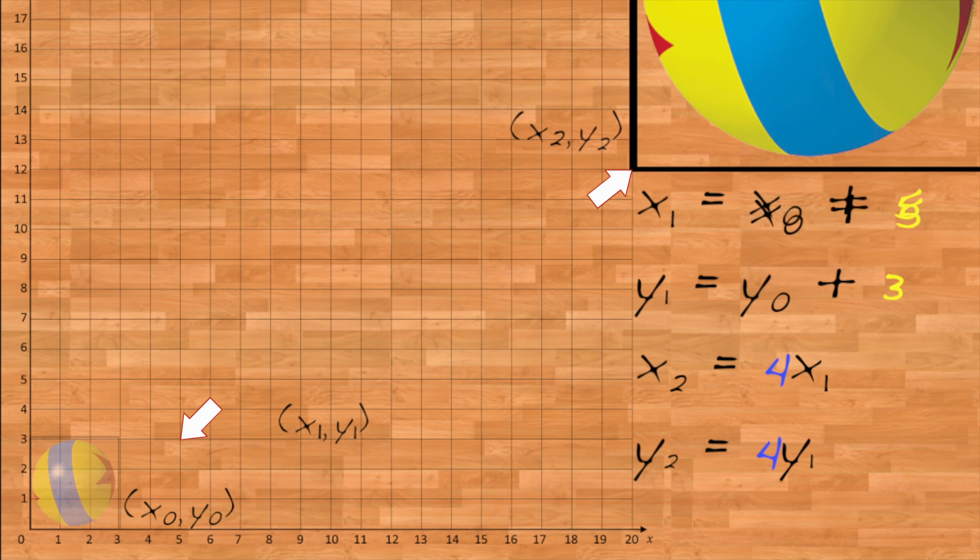Substitute our expressions for x1 and y1. x2 equals 4 times x0 plus 5, which equals 4 times x0 plus 4 times 5, which equals 4 times x0 plus 20. And y2 is equal to 4 times y0 plus 3, which equals 4 times y0 plus 12.